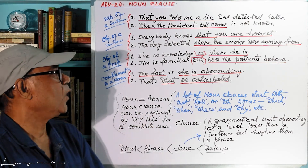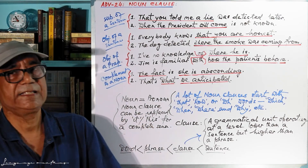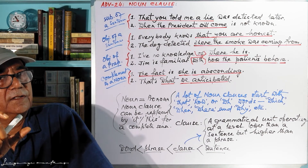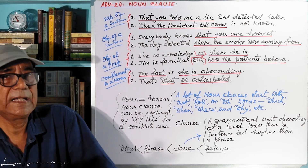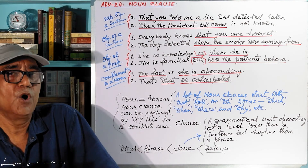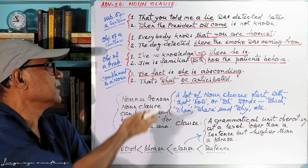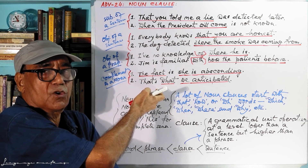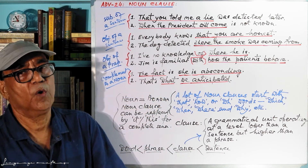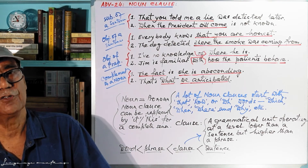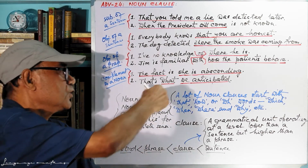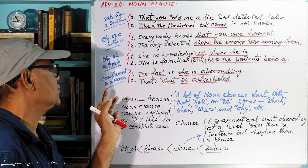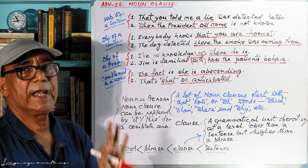"That's what we anticipated" — what we anticipated is the same thing here. Therefore, it is also an example of a complement to a noun. This is all about the noun clause.